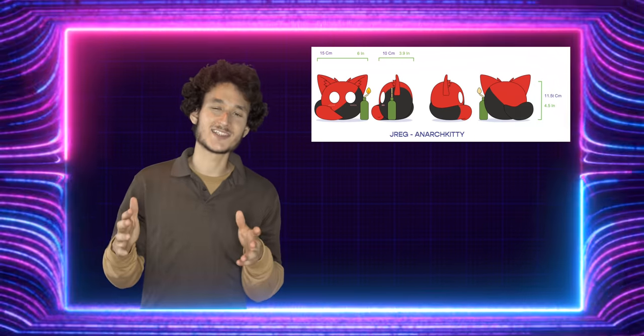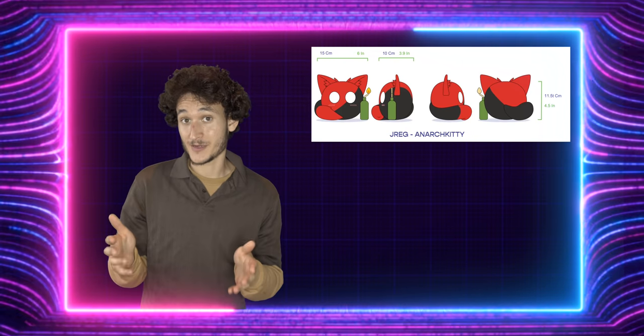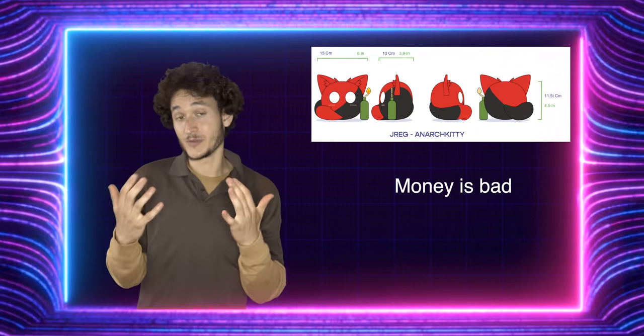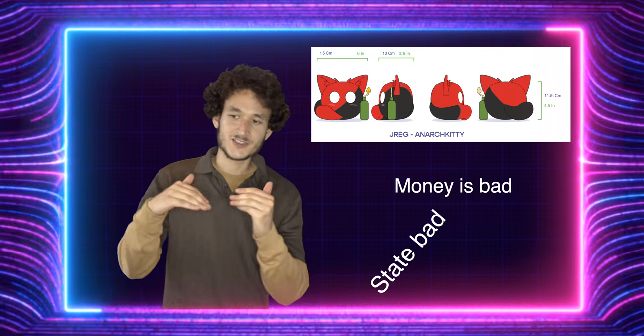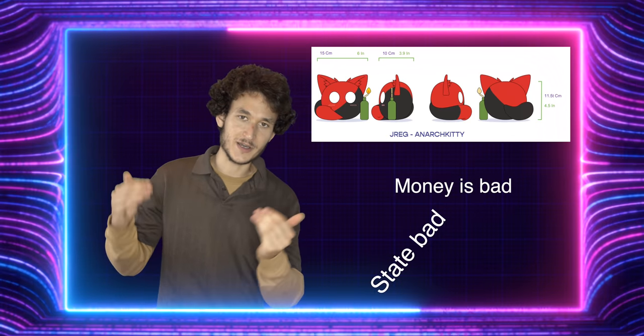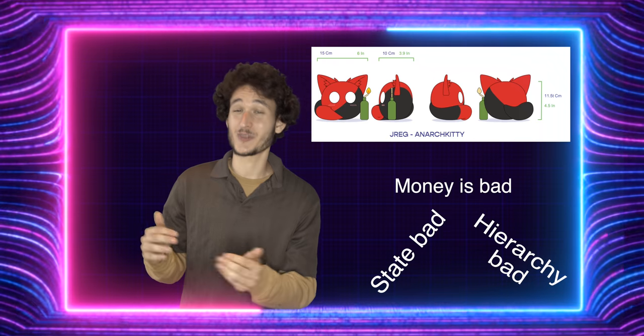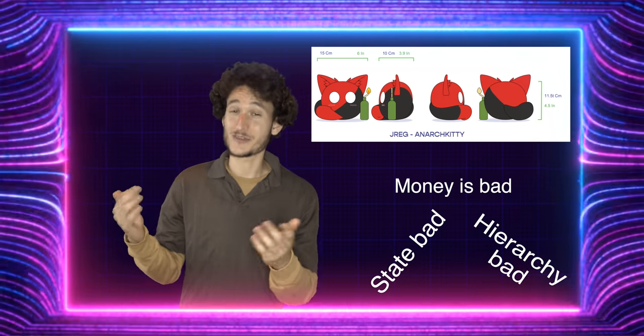So some of the axioms that might make up an anarcho-communist framework might be: money is not inherent to human nature. They might also posit centralized power will always become corrupted, and that humans are better off organized without class and without rigid hierarchy than with rigid hierarchy.